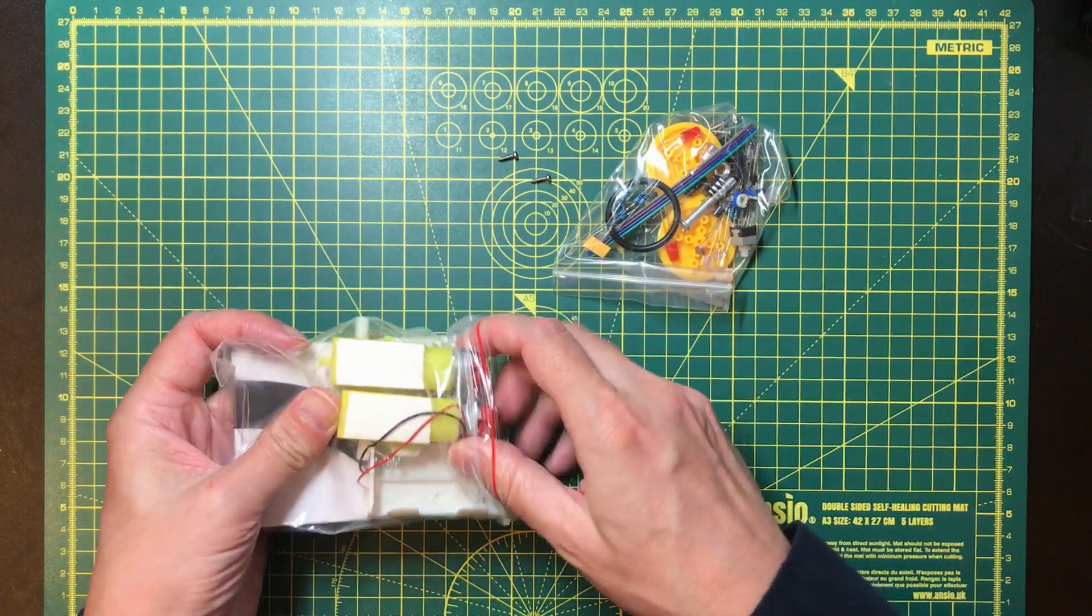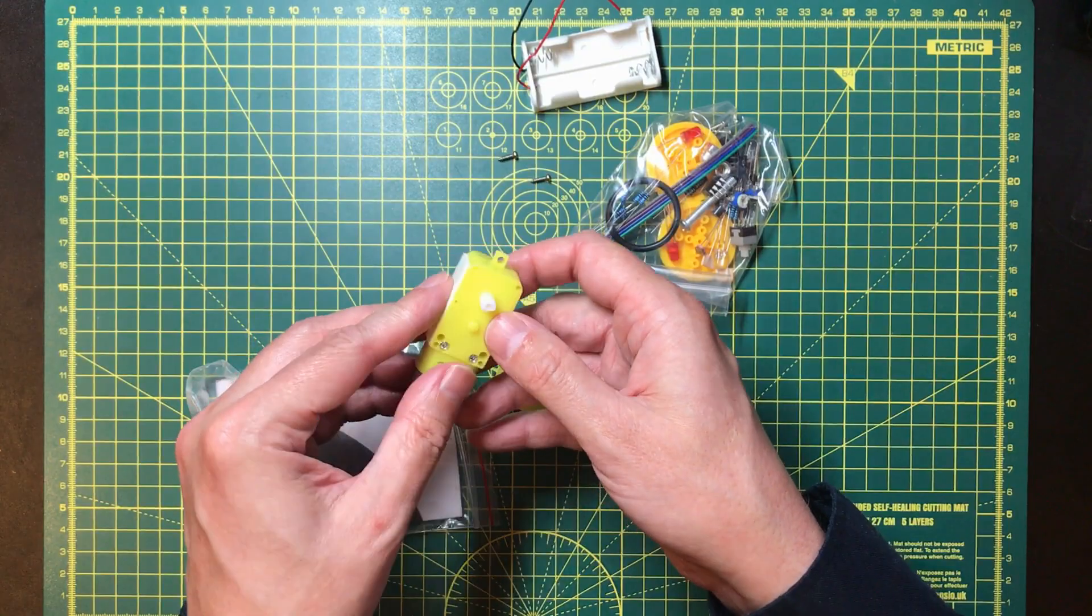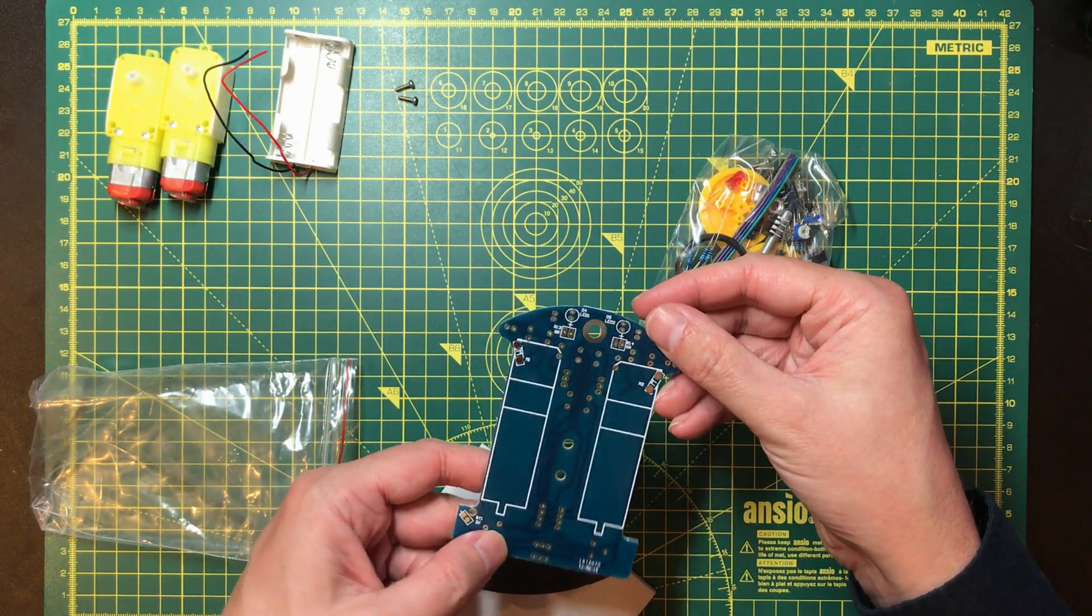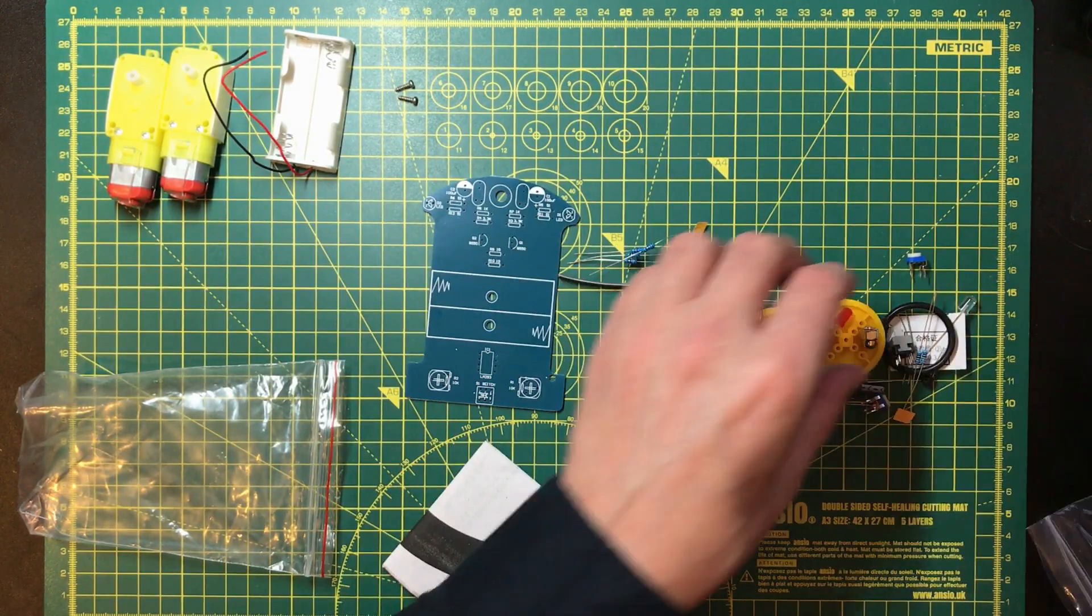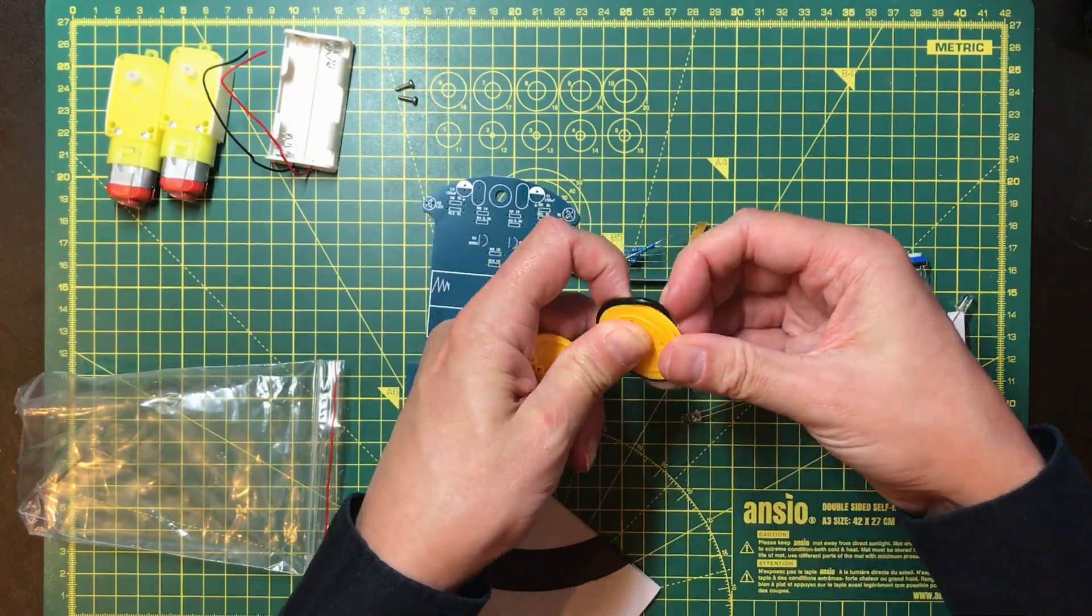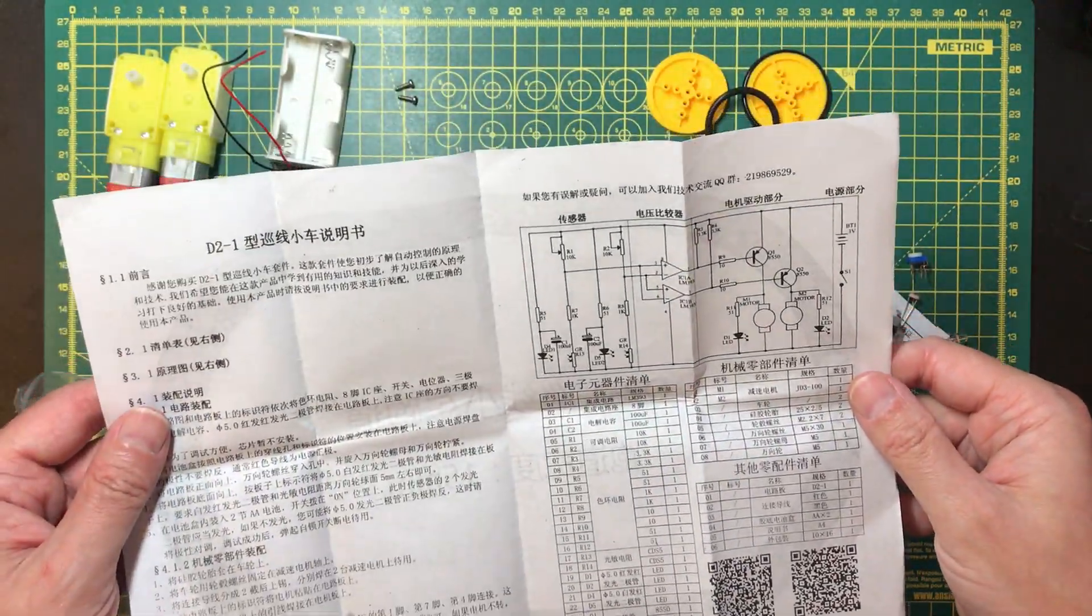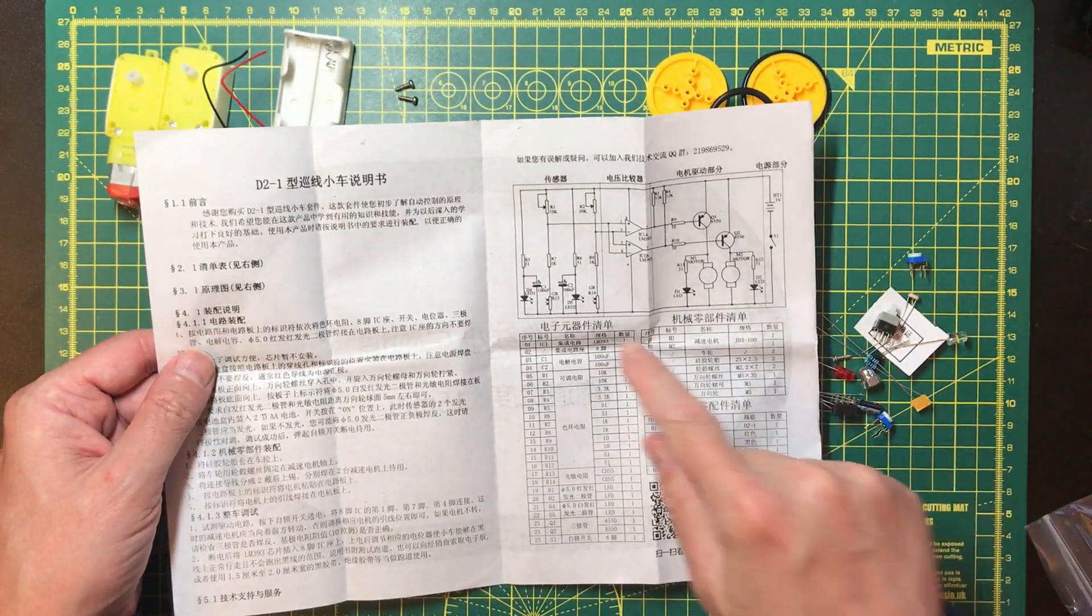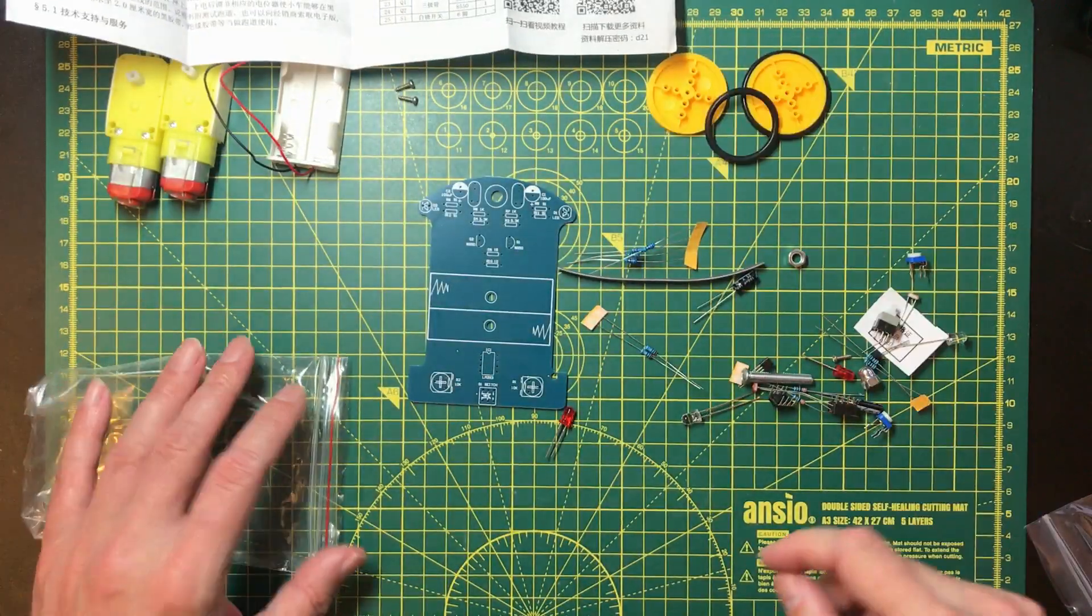Two screws, two motors. So they have like an elastic strap that holds them to the gearbox. These look like they might be repurposed pulleys. Okay, so the instructions are in Chinese and not very extensive. Let's see if we can work out what to do.